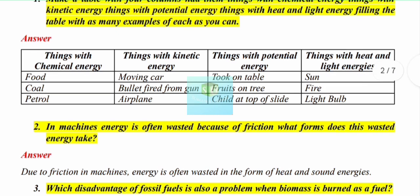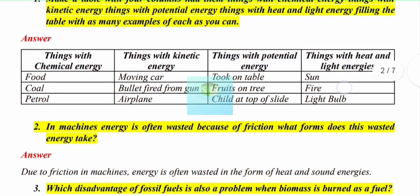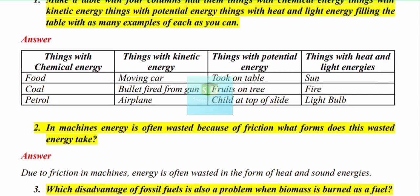The last column is heat and light energy. The sun gives energy in the form of heat and light. Fire also produces both light and heat energy. A light bulb when burning gives off light and also releases heat energy. You can give more examples, but three or four is sufficient for a short answer.